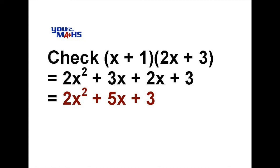This matches our original expression so our factorization is correct. The final solution is x plus 1 in one bracket and 2x plus 3 in the second bracket. Those brackets could be switched around so that 2x plus 3 is first and x plus 1 second.